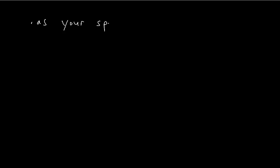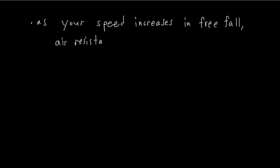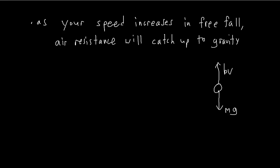We're going to solve Newton's second law for an object in free fall with linear air resistance. Since air resistance depends on velocity, as the object falls and speed increases, the air resistance increases. Eventually, the air resistance force equals gravity, the net force becomes zero, and the object stops accelerating — maintaining a constant speed. We solve for this constant speed by setting mg equal to bv, giving terminal velocity v_t equal to mg over b.